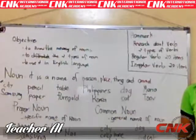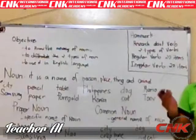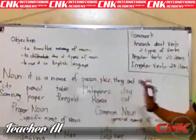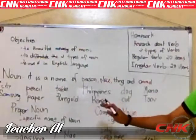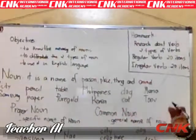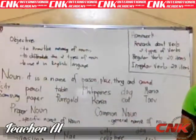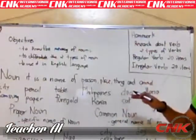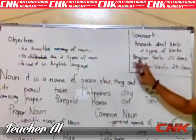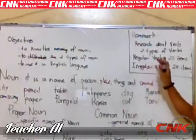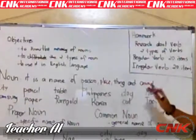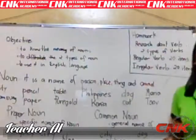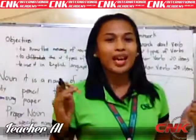Do you have any questions about our lesson for today? Remember: noun is the name of a person, place, thing, or animal. There are two types of noun — proper noun, which is a specific name, and common noun, which is a general name. For your homework, research about verb and the two types of verb: regular verb and irregular verb. Give 20 items for each type and pass it tomorrow on white bond paper. That ends today's lesson — thank you very much and have a good day.